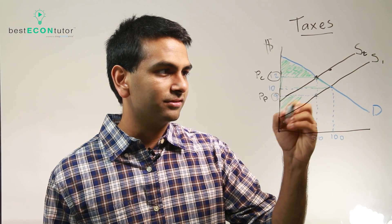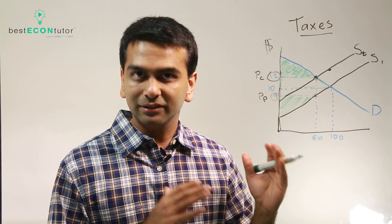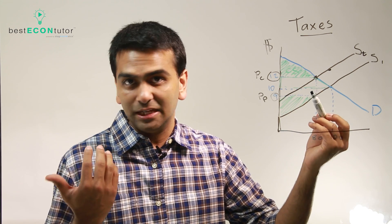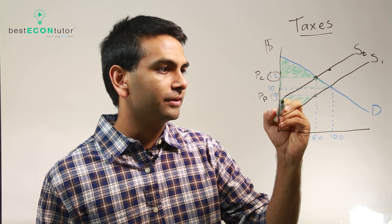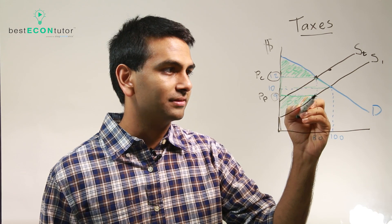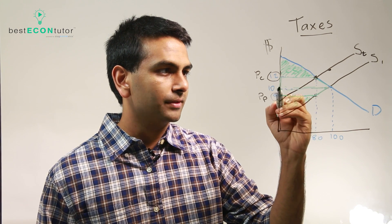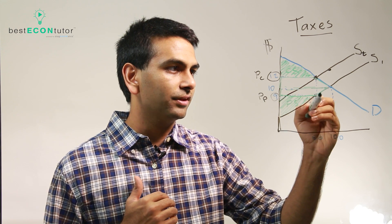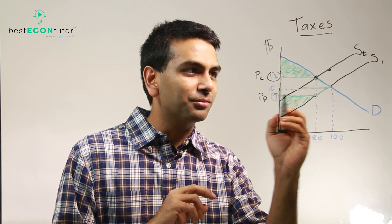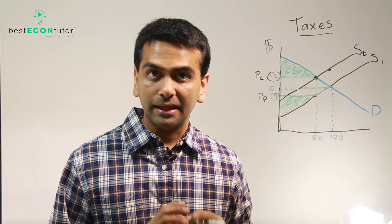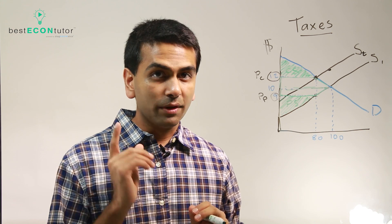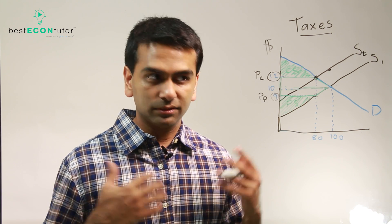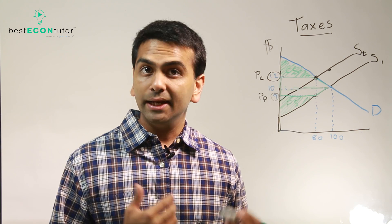Their producer surplus will now be this area. We still measure it from the original supply curve, not the new one, because we're not including the tax in their producer surplus since they don't get to keep it. Their true cost is the original supply curve. Notice that's also still less than before — it's less by that trapezoid — because it used to be everything below 10, now it's everything below 9. So CS and PS combined seem like this house-shaped region would be the deadweight loss, but it's actually a lot less than that, because not all that money is going to nobody. We have to take into account government revenues, which should always be included as part of total surplus.